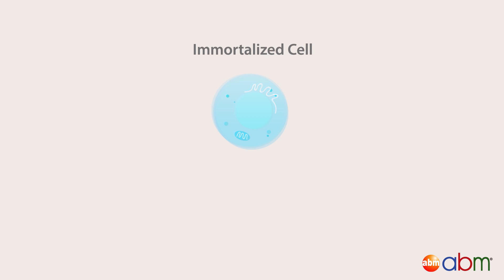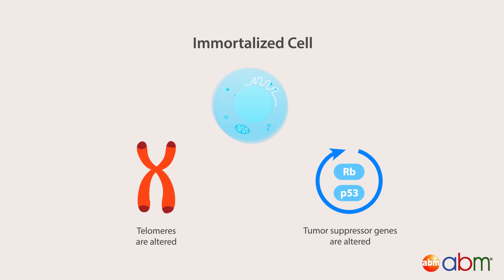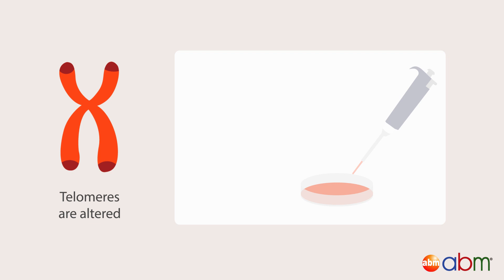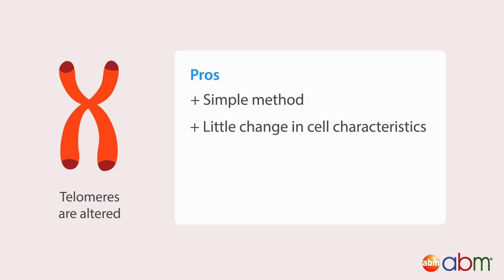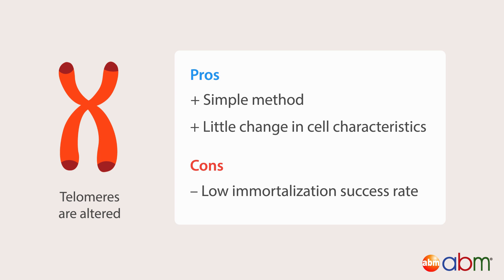Immortalized cells are primary cells whose telomeres and/or tumor suppressor genes have been altered. When targeting the telomeres, insert cDNA into your primary cells coding for the hTERT protein, which induces telomerase activity and regenerates the telomeres, thus preventing replicative senescence. This method is simple and causes little change in the cell's characteristics, but could have a low immortalization success rate.